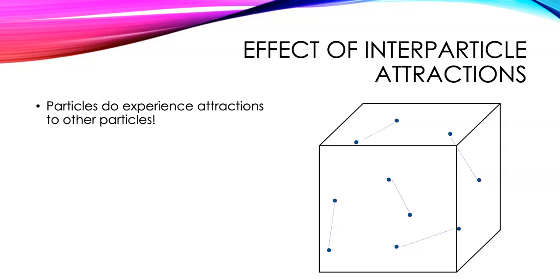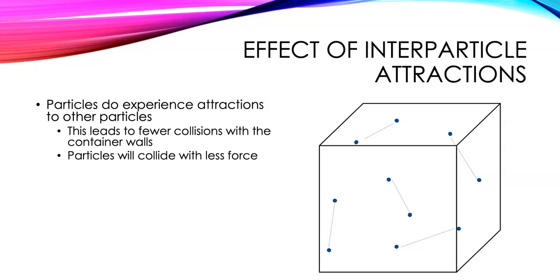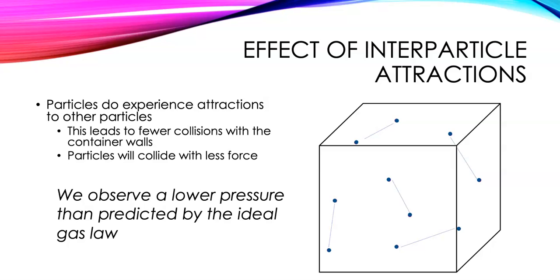Kinetic theory says there are no attractions or repulsions between particles, but we know that molecules and atoms do experience attractions to each other — even in the gas phase. If they're attracted to other particles, they're going to collide with the container walls a little bit less frequently and with less force, because those attractions sort of slow them down. So we end up with a lower pressure than predicted by the ideal gas law because of the attractions between the particles.